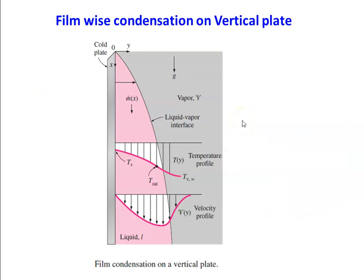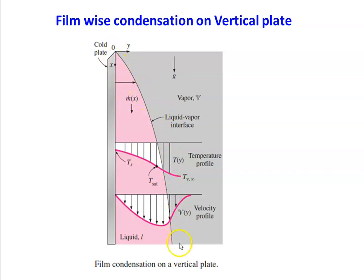In film condensation on a vertical plate, the gray area represents the vapor at saturation temperature, and the cold plate is at a temperature lower than the saturation temperature. The vapor loses heat, forming a liquid layer on the surface that falls downward. The boundary layer thickness and the film thickness are the same. Outside the boundary layer, there is only vapor.